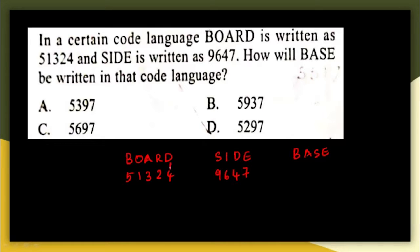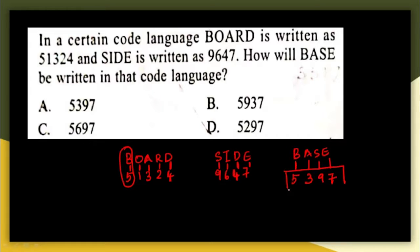Observing both words: D is coded as 4 in both cases, confirming each letter has a fixed code. So S=9, I=6, E=7, B=5, A=3, O=1, R=2. Following this pattern, BASE will be coded as B=5, A=3, S=9, E=7 — giving us 5 3 9 7.